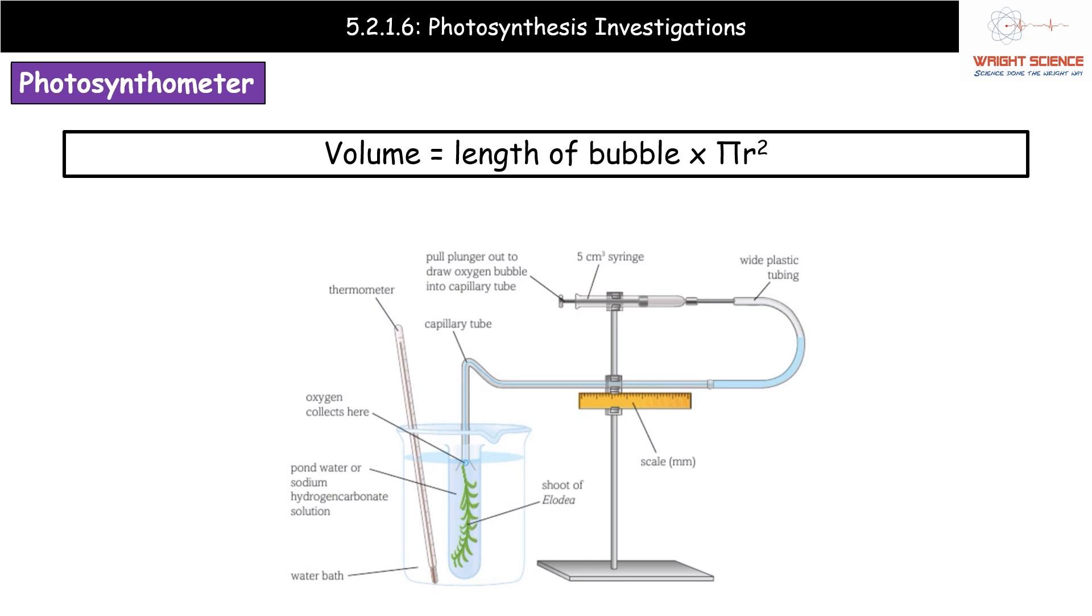So how does this work? We would set up our experiment, allow it to create some nice little oxygen, and then using the syringe, we can actually move the bubble. Basically, we collect a volume of gas over a known period of time. We can use that syringe to draw our gas bubble into the part of the capillary tube that lines up nicely with our scale, and then we can read off the length of our bubble.